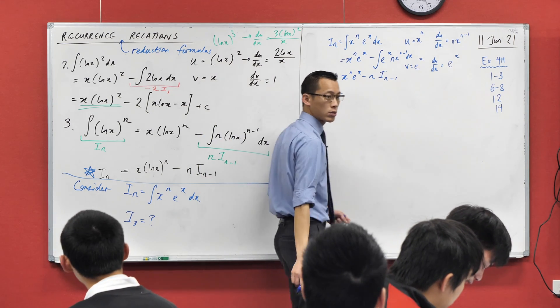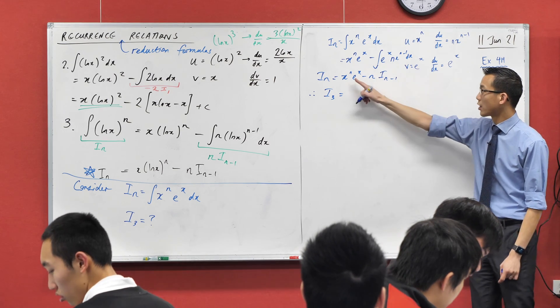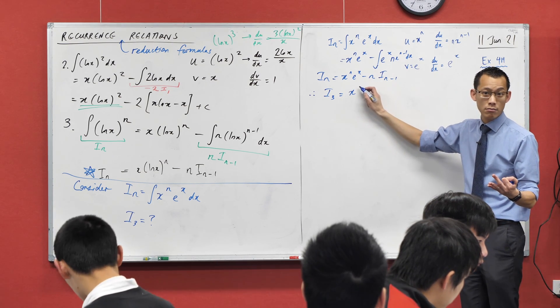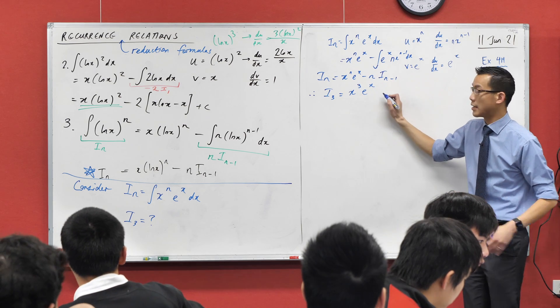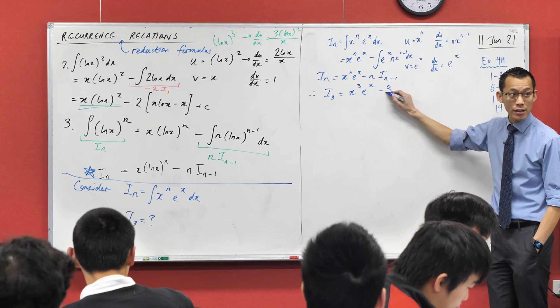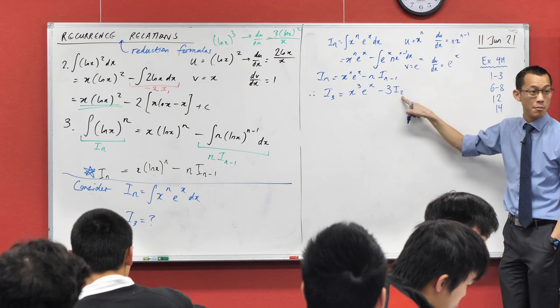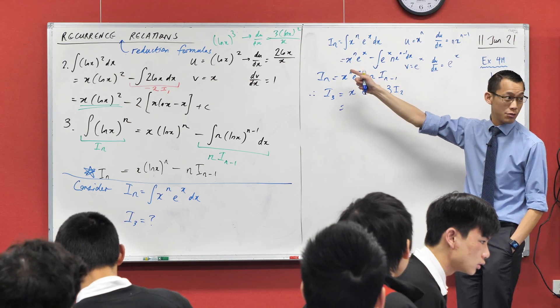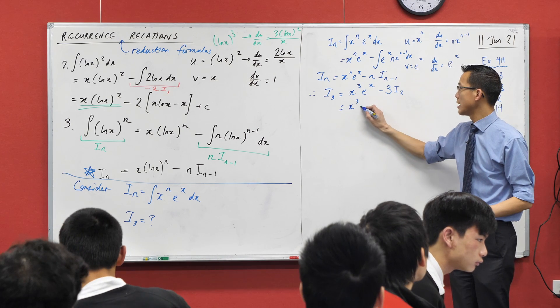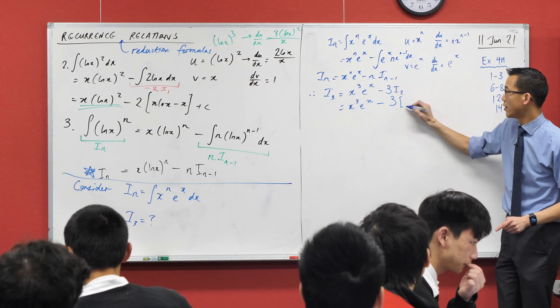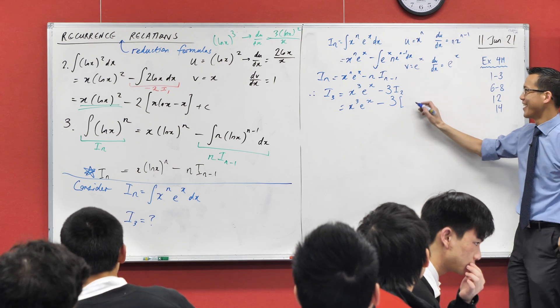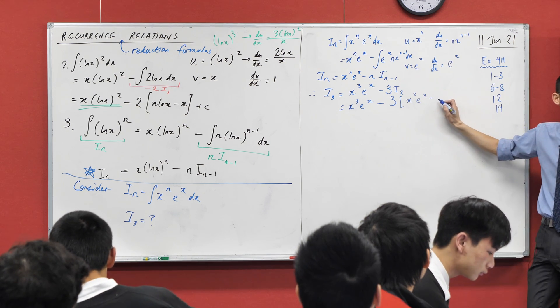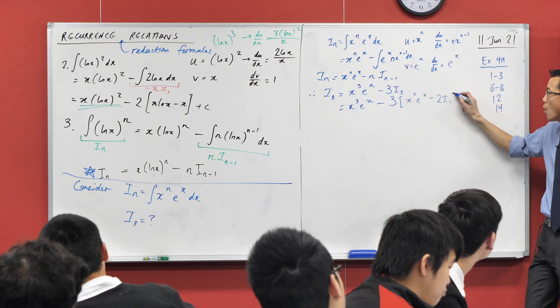So now I've got a particular value of n that I'm after. So I'm going to say, therefore, if this is i n, what's i3 going to be equal to? I'm just going to start subbing stuff in. Here's my value of n. I see it coming up three times, so I'll do three substitutions. x cubed times e to the x, minus what? 3 lots of i2. There's my n minus 1. You're like, what's i2? Dunno. Let's go again.